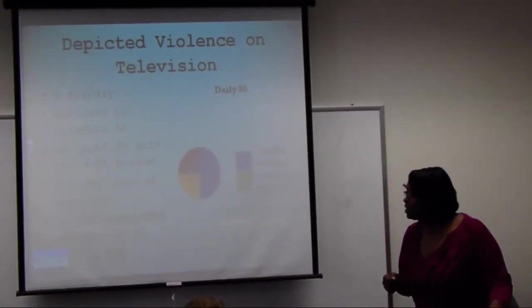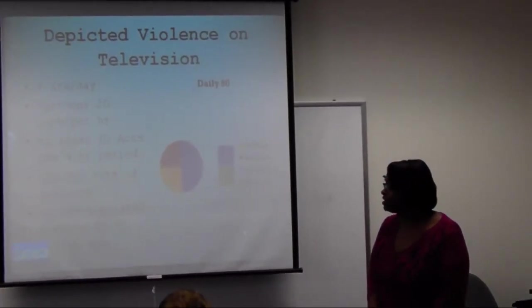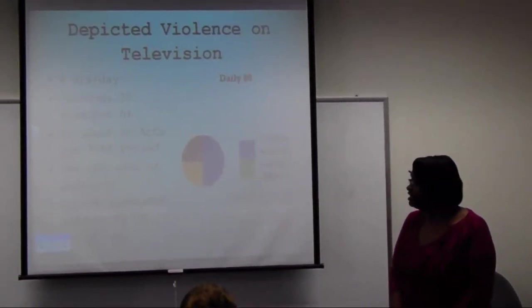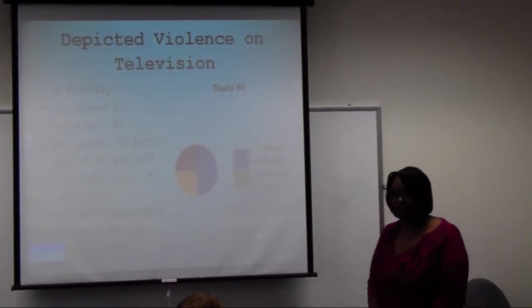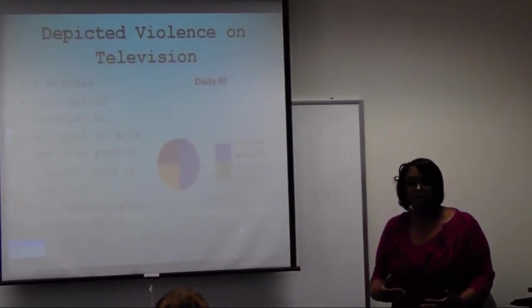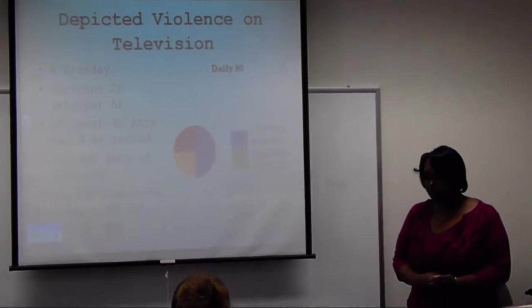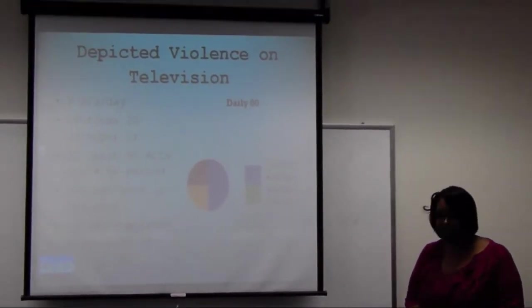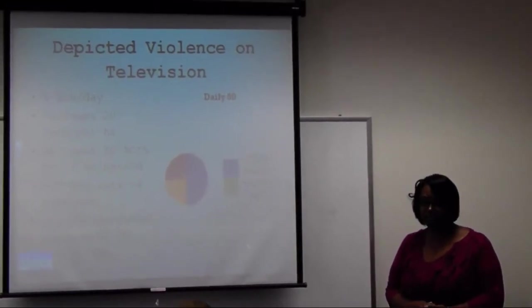By the time your children become 16 years old, they will have watched 200,000 acts of violence and 16,000 simulated murders. That is an alarming rate for children, especially watching cartoons, Spongebob, That's So Raven. That's alarming. And we as parents, we definitely need to start watching what our children are watching and monitoring the television shows.